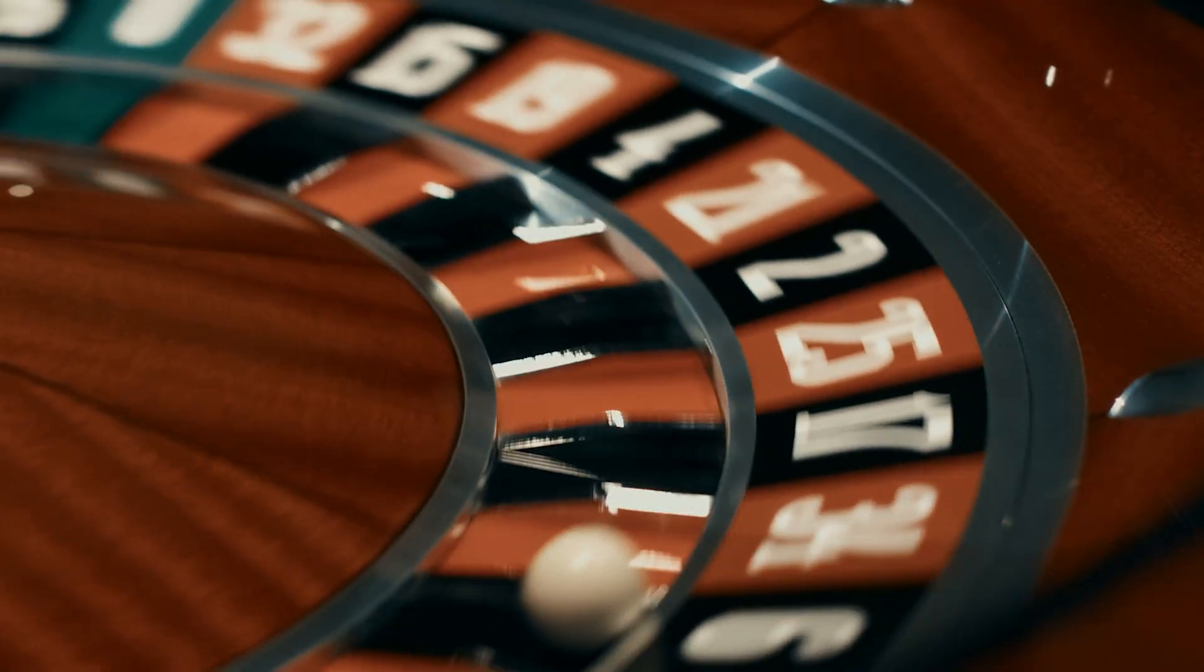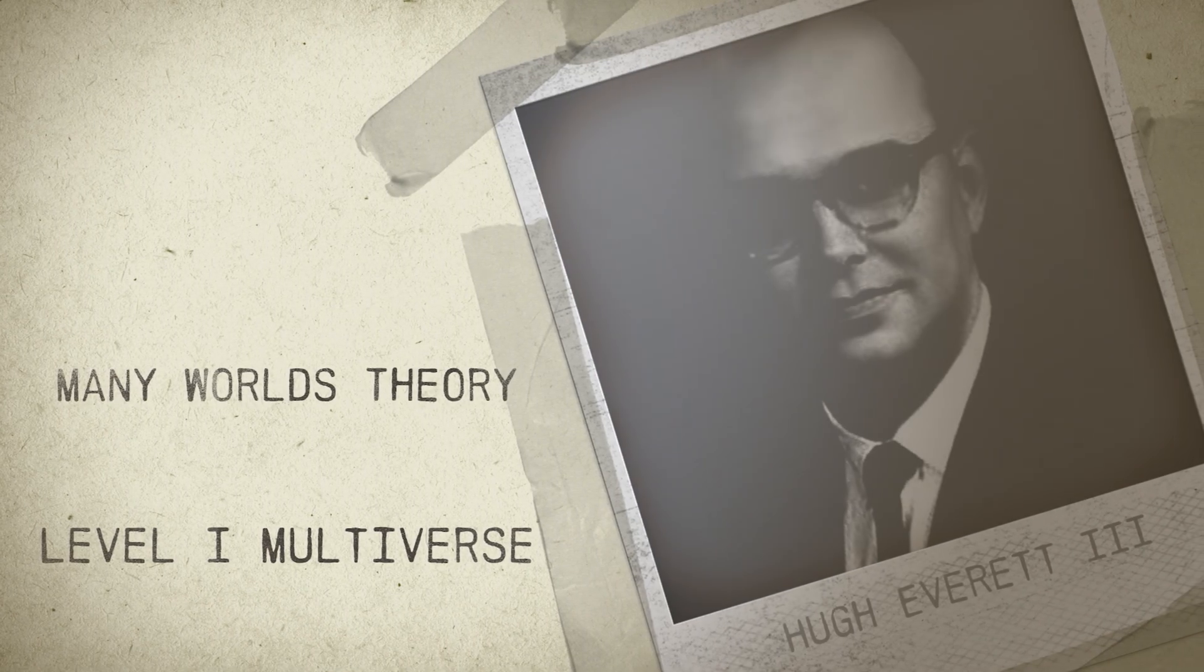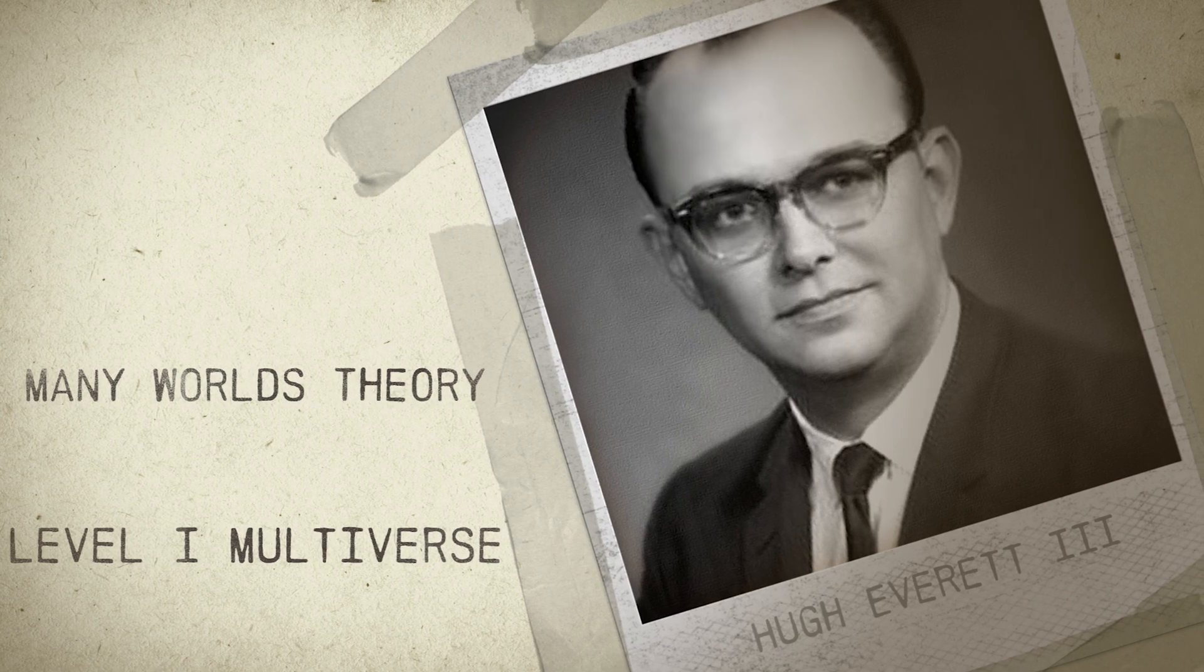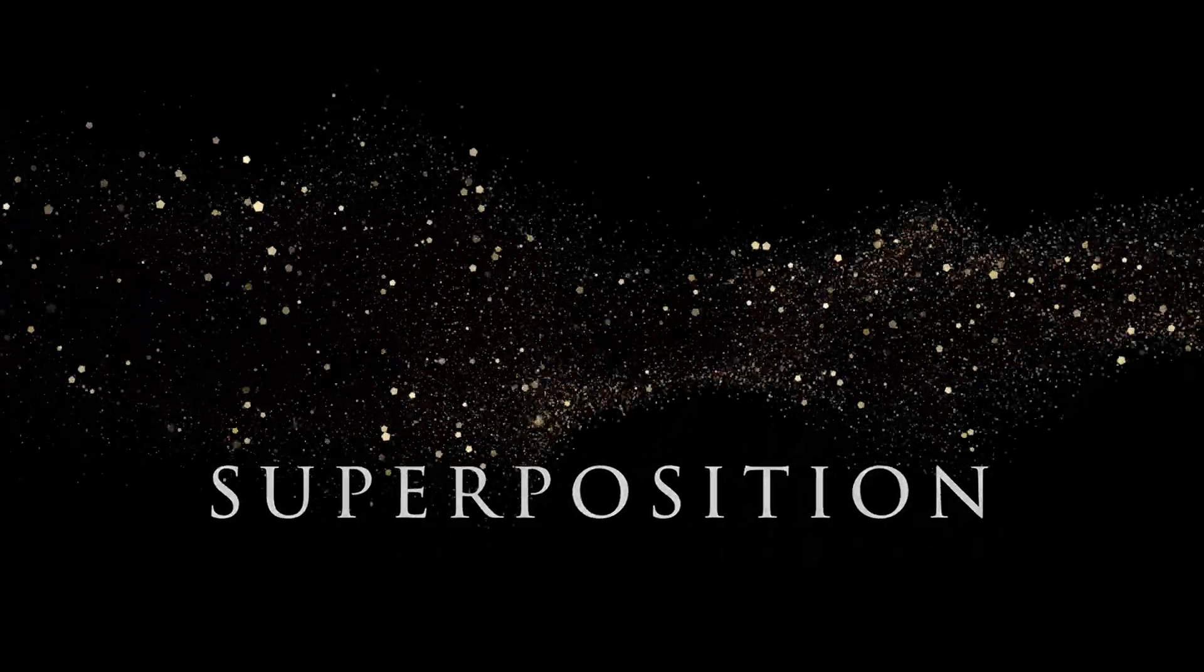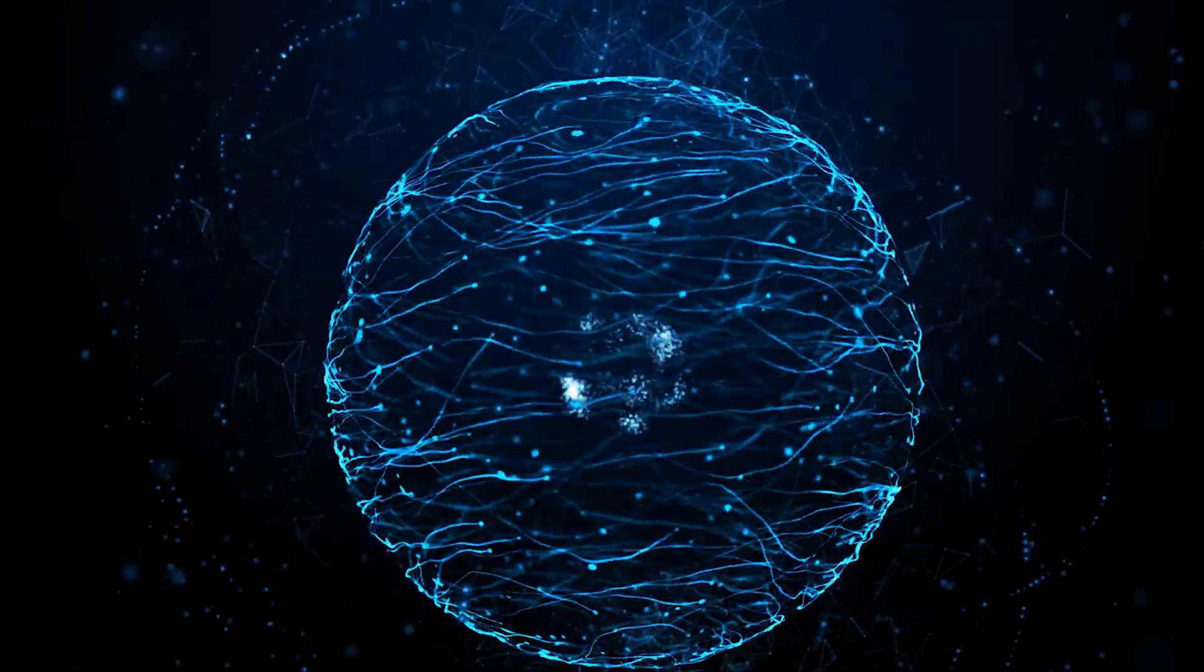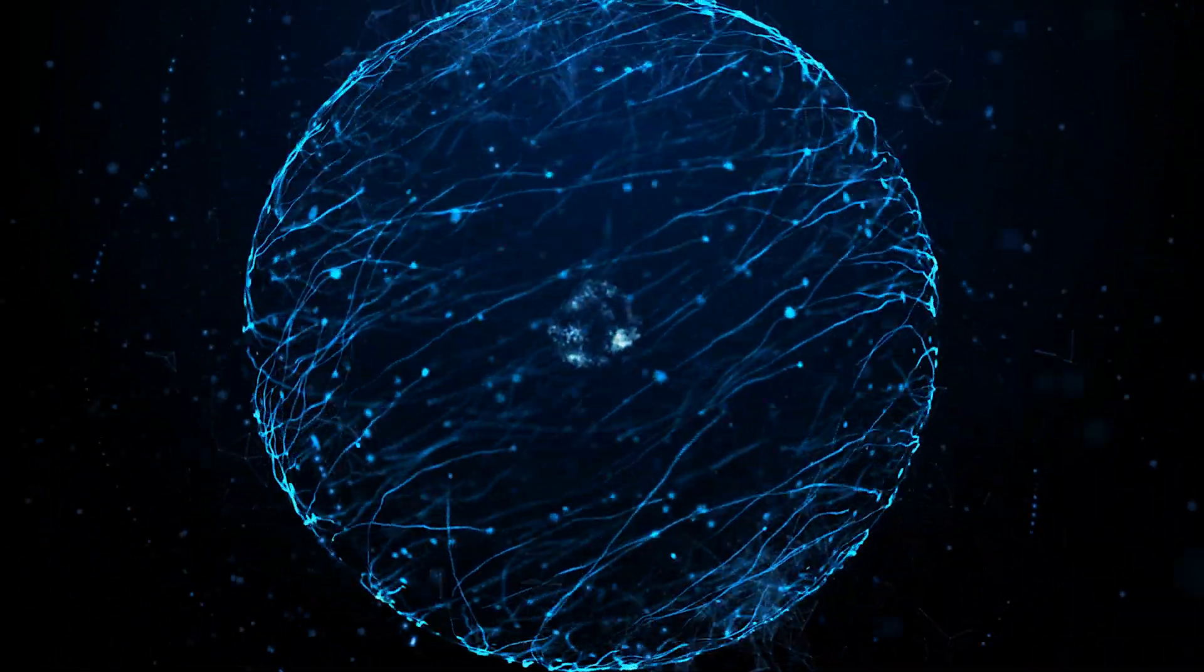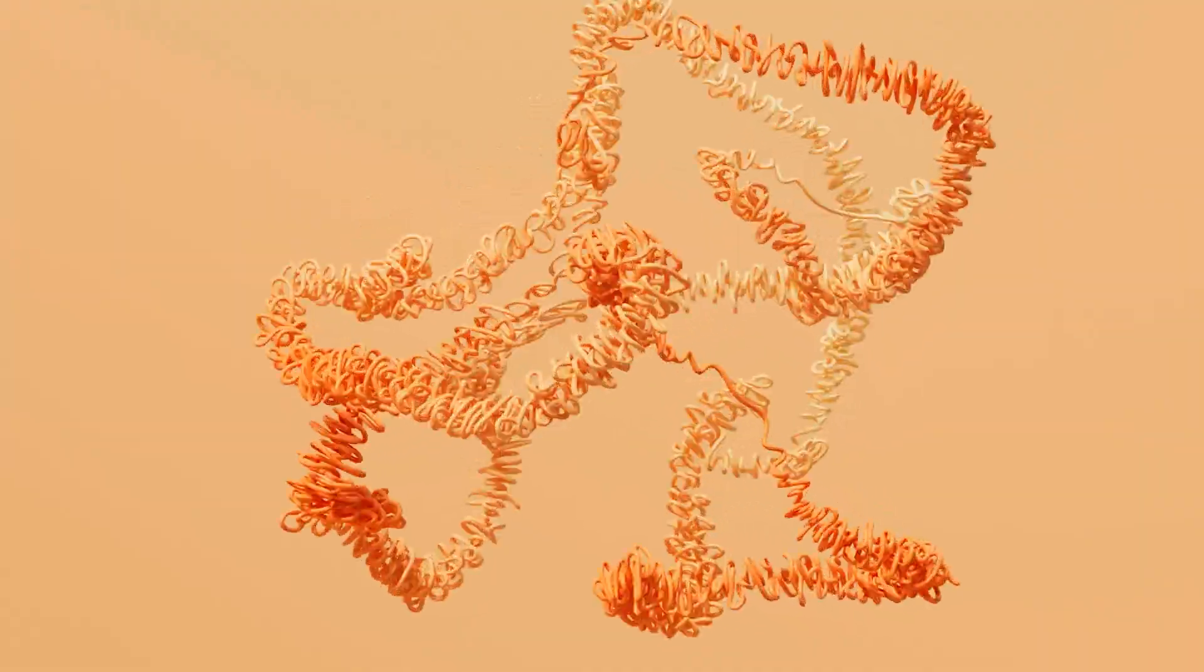The idea of the many-worlds theory was first proposed by physicist Hugh Everett III in the 1950s as a way to explain certain strange features of quantum mechanics, such as the concept of superposition, an idea that a particle can exist in multiple states at the same time. Everett argued that the many-worlds theory was a more satisfactory explanation for this phenomena than the traditional interpretation, which suggests that the outcome of a quantum event is determined by random chance.